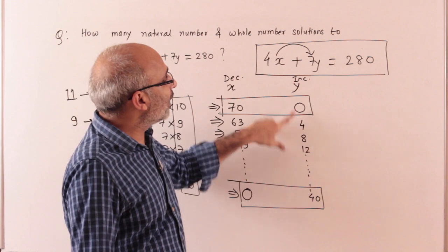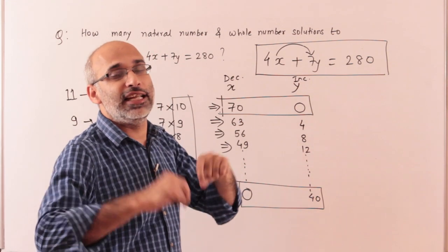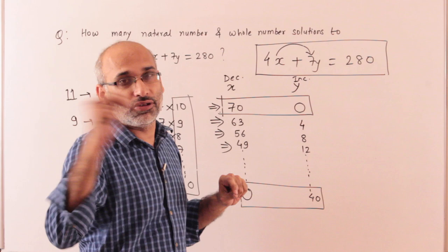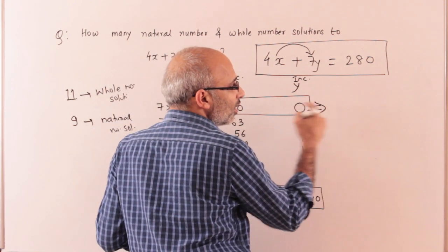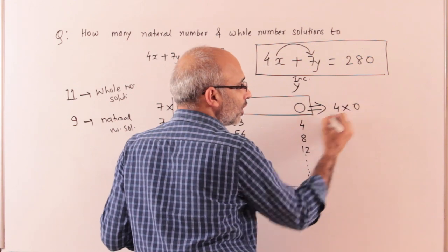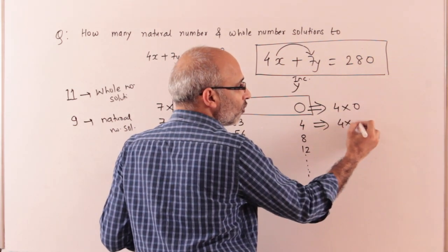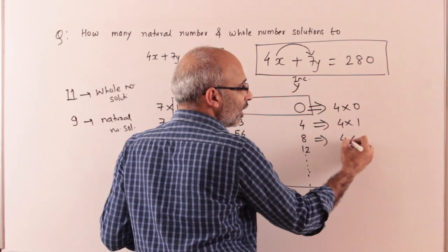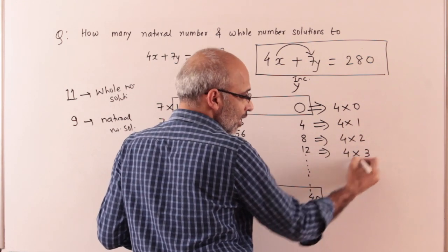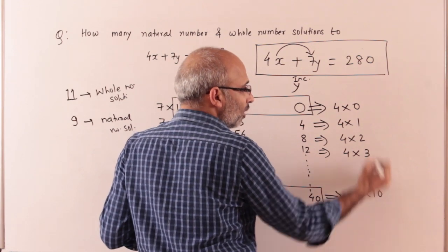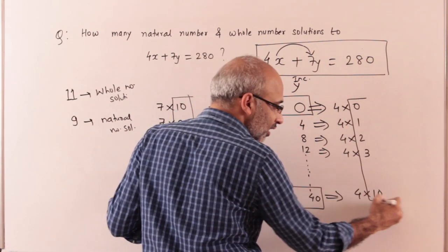If you count the number of y, as y increases by 4, this will be 4 into 0, this will be 4 into 1, this will be 4 into 2, and the last one will be 4 into 10.